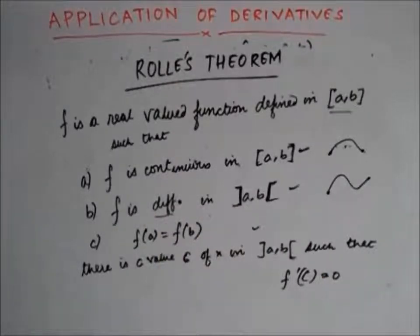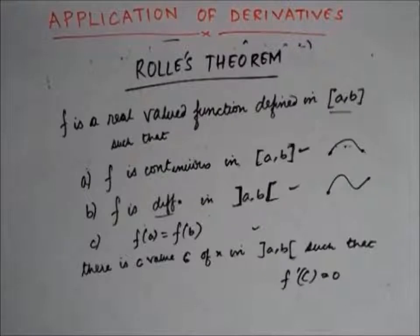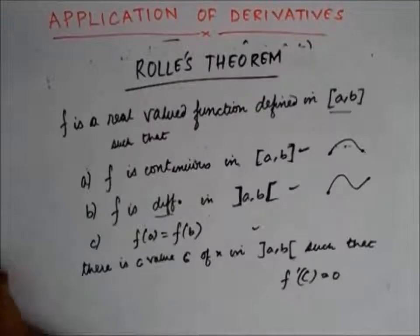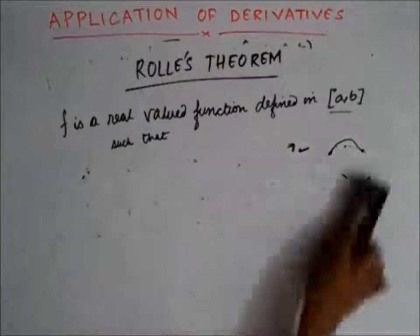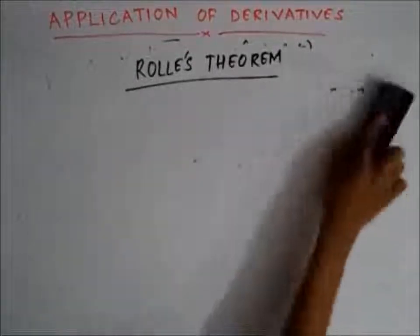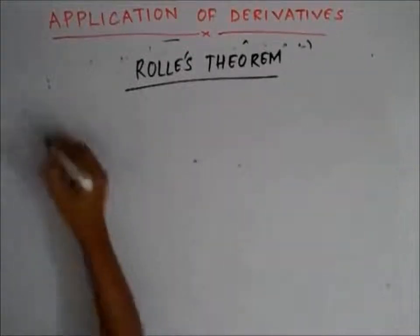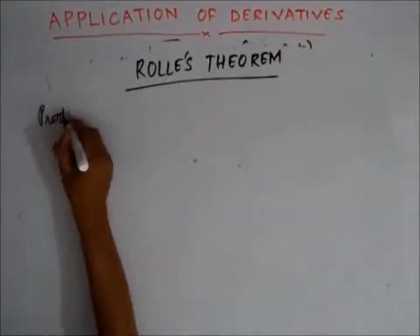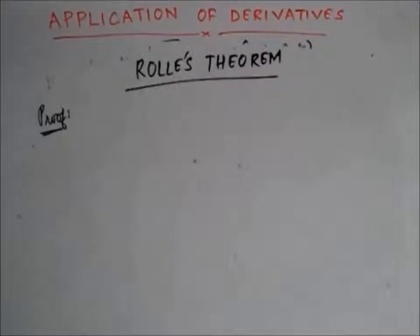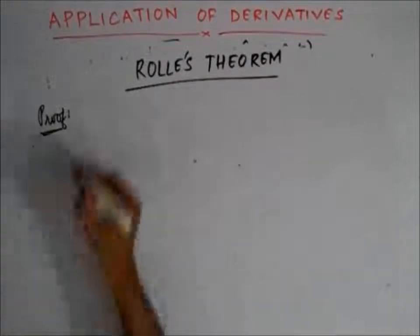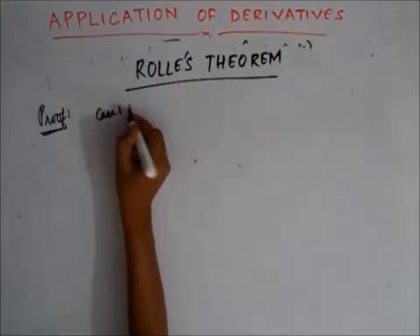Now let's understand how this theorem holds and prove it. Since f is a real valued function, the first condition says f is continuous in the closed interval. Now since f is continuous, the first case can be that f is a constant function.